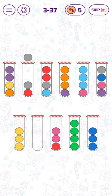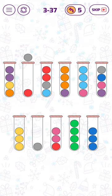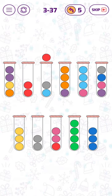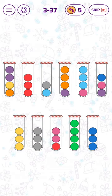We can move those two grey bubbles down. Now we can put the red bubbles together. And we can fill this grey tube.